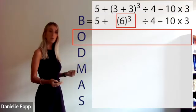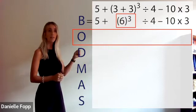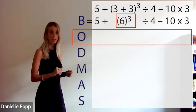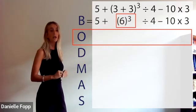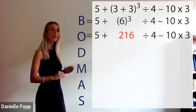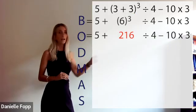Then we move to orders. Here we have 6 to the power of 3. Use your calculator and we end up with 216. When we write orders, we add that line in.